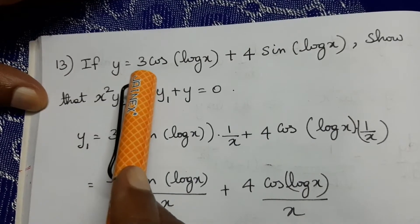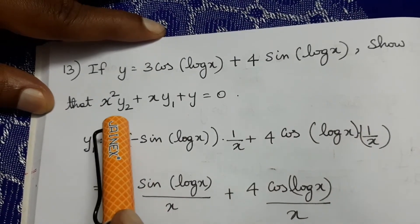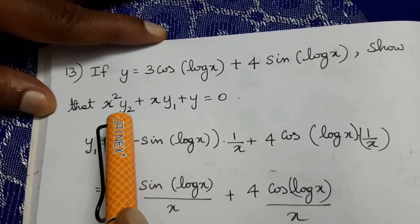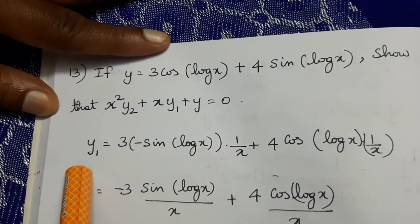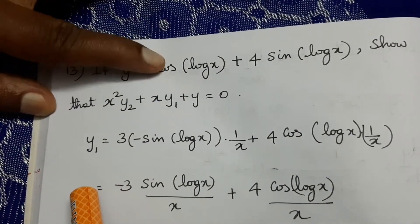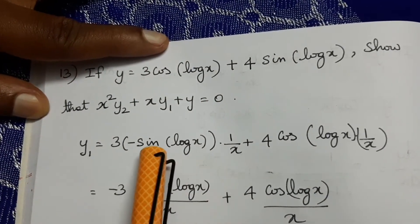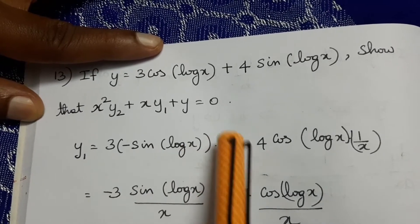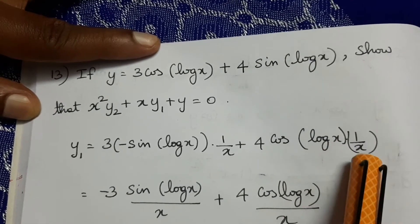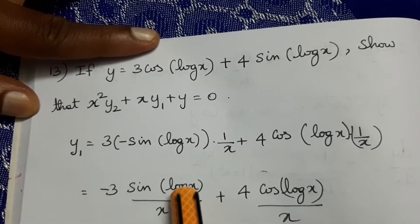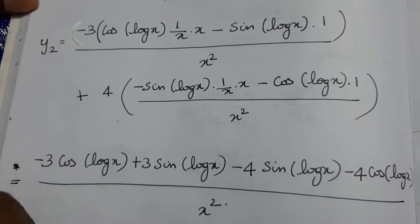Next problem: if y equals 3 cos(log x) plus 4 sin(log x), show that x²y₂ plus x·y₁ plus y equals 0. Here y₂ is d²y/dx² and y₁ is dy/dx. So dy/dx, differentiating 3 cos(log x) gives minus 3 sin(log x) times 1 by x.